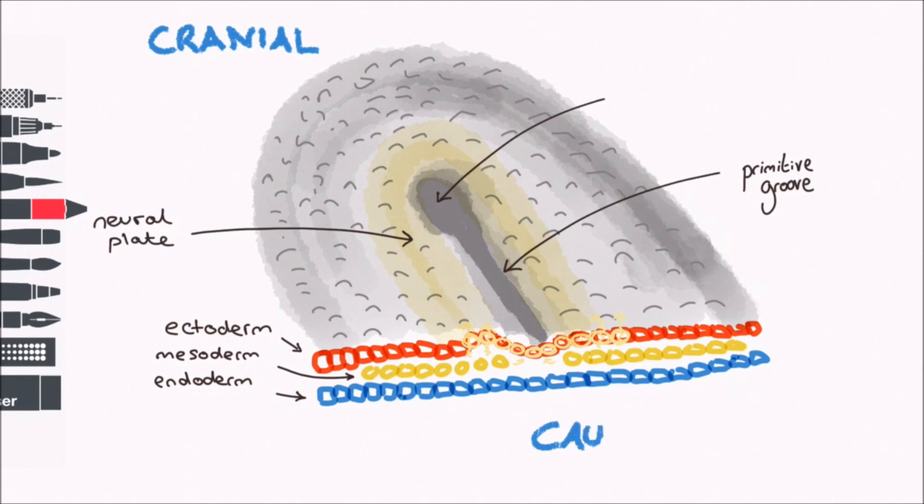As the neural plate elongates, the embryonic disc becomes stretched, with a wider end that will become the head and a thinner end that will become the body.